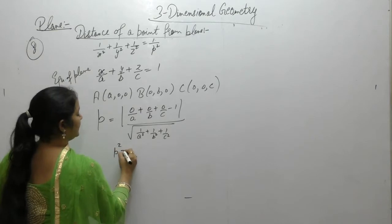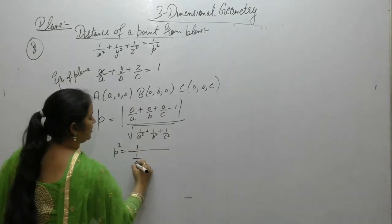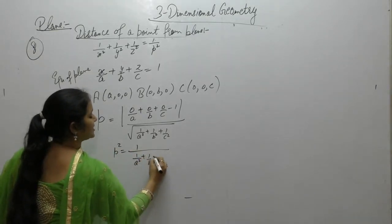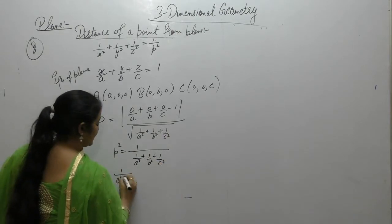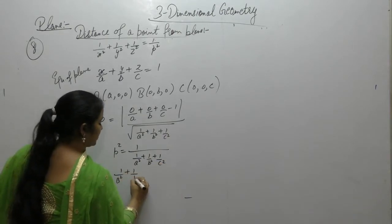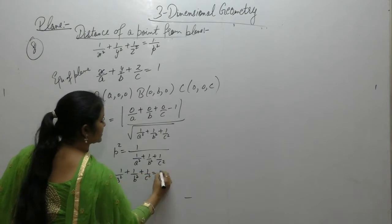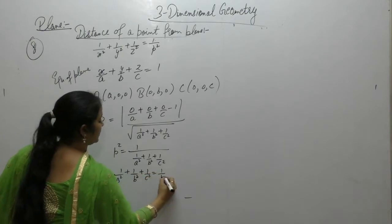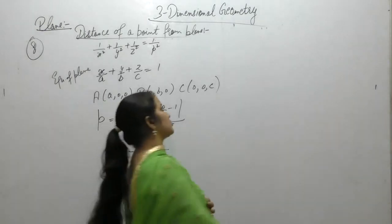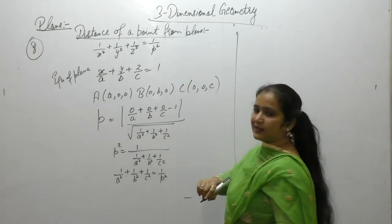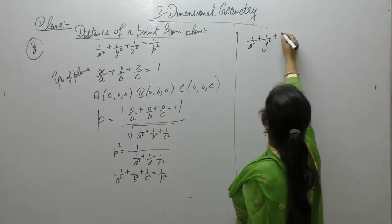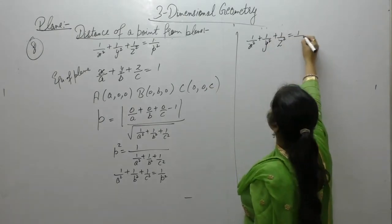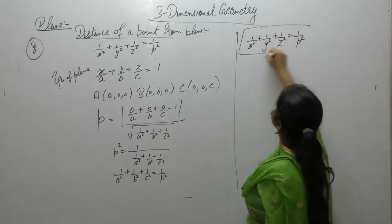Squaring both sides, p square equals 1 upon (1 upon a square plus 1 upon b square plus 1 upon c square). Or, we can say 1 upon a square plus 1 upon b square plus 1 upon c square is equal to 1 upon p square. Now the locus of the point alpha, beta, gamma gives us 1 upon x square plus 1 upon y square plus 1 upon z square is equal to 1 upon p square.